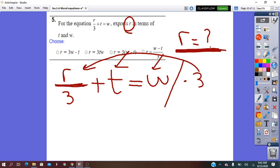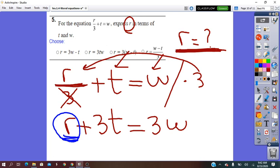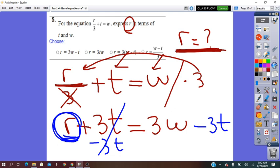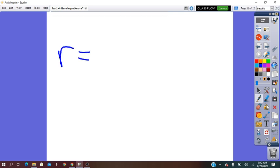It will be r over t times t. This t is out. It will be left only r. Plus t times t, tt equals w times t, it's tw. The variable r, so we look for it. This is written here. We have to isolate this one. So minus t squared, minus t squared. It will be r equals tw minus t squared.